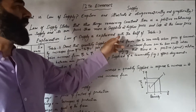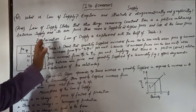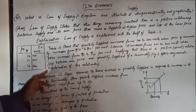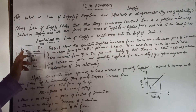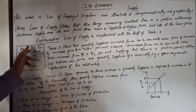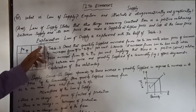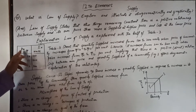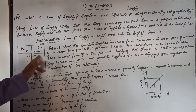The law of supply is explained with the help of Table 3. We will understand this supply schedule. For example, if the price of a product is 10, then the supply of the commodity — measured in units — will be 100 units.